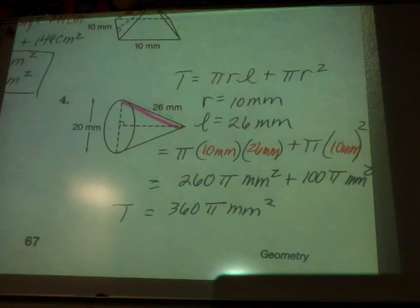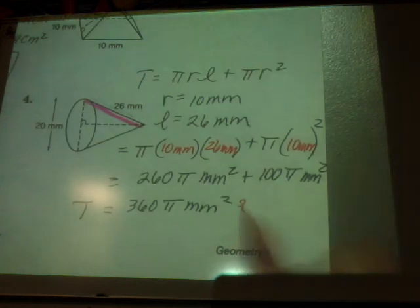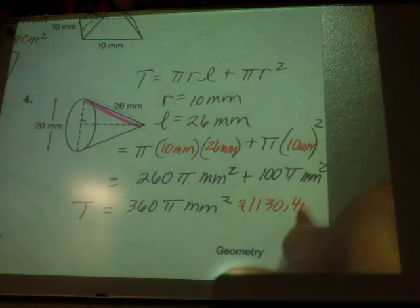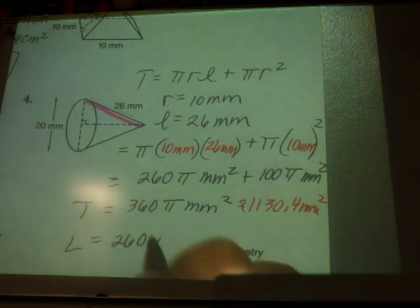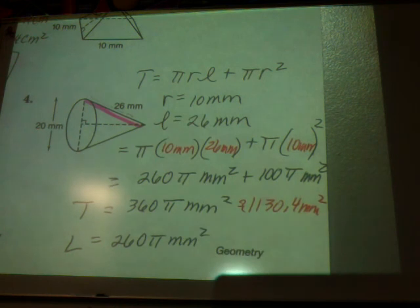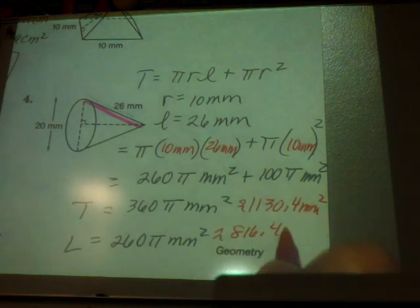I prefer the exact answer. But most likely they're going to, as they did here, ask you to give the decimal equivalency. So you need to take that 360 and multiply it by 3.14. And in this case we get an approximation of 1,130.4 millimeters squared. What's your lateral area? The 260π millimeters squared, which its approximation is 816.4 millimeters squared.